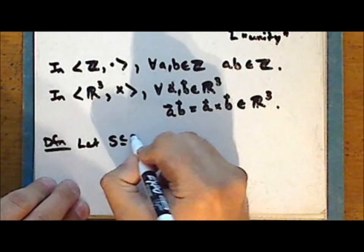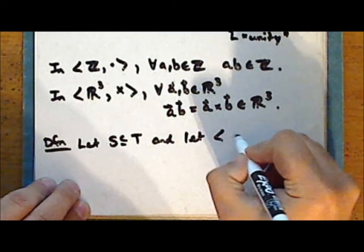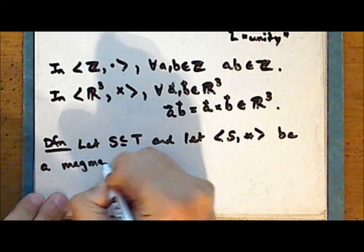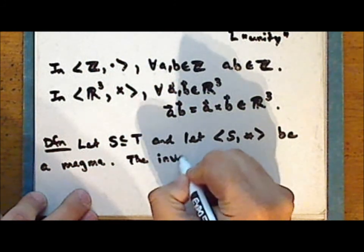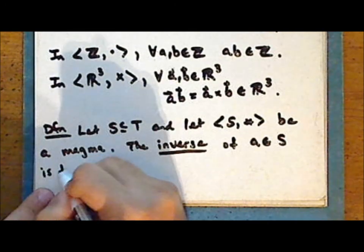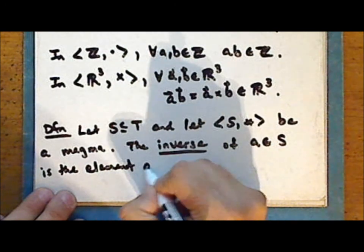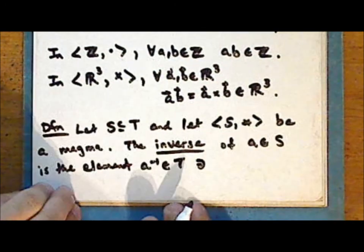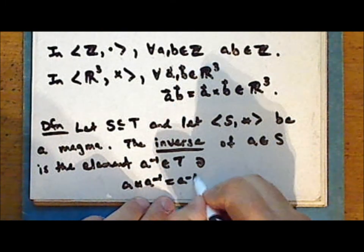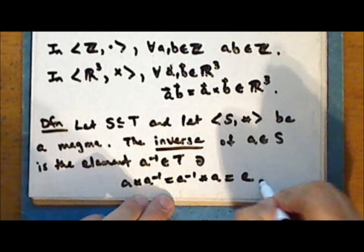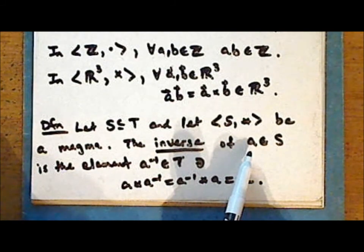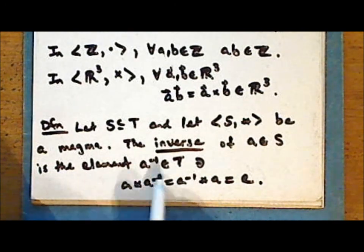New definition: let the set S be a subset of a larger set T, and let the structure consisting of S together with a binary operation star be a magma. The inverse of an element A in the set S is the element A-inverse in the set T such that when we perform the operation star in whichever order between the element A and its inverse, we obtain the identity element. Notice that the inverse for a given element in the set S may or may not be contained in the set S.